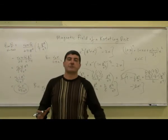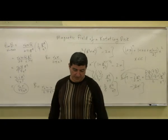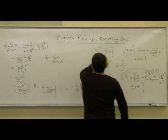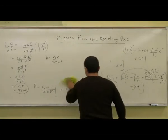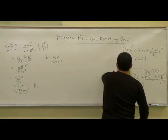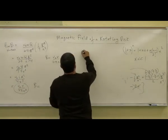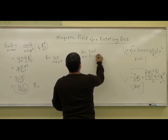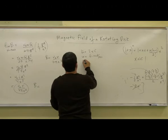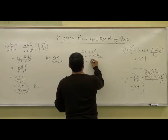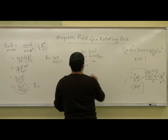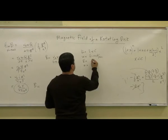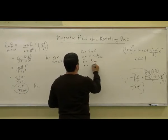The behavior makes sense and you can see that this is doable. Now let's actually get a number. So what is the magnetic field strength? Let's say we have the charge equal to 2 microcoulombs and omega is 6 radians per second. Let's say the radius of the disk is 1 meter — actually, let's make it 3, and then x is 4 meters.